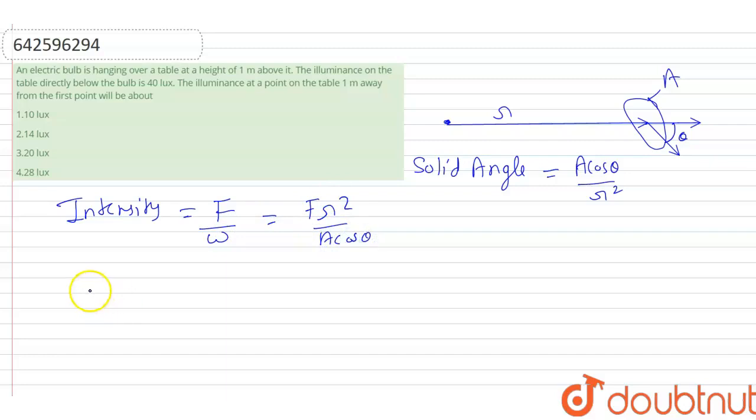And from here we can say that F is equal to I A cos theta by r squared. So this is the value of flux illuminance. Now, what is illuminance? Illuminance E is equal to F by A, so which will give us I cos theta by r squared. So this is the formula.